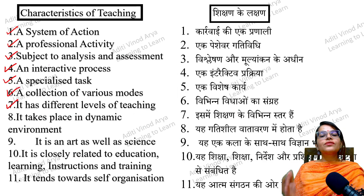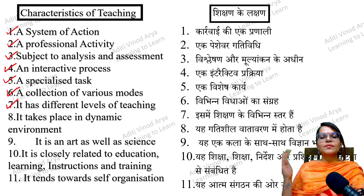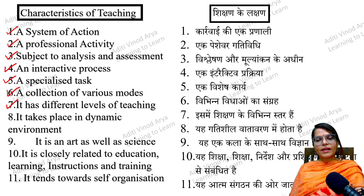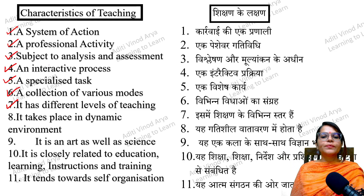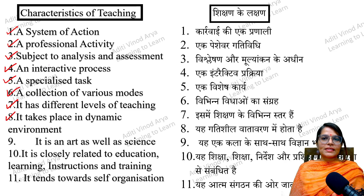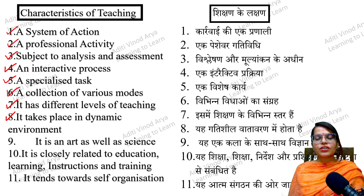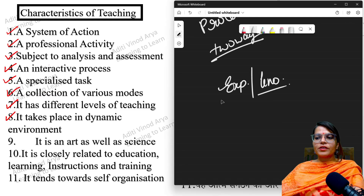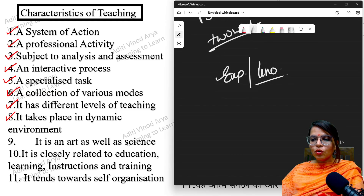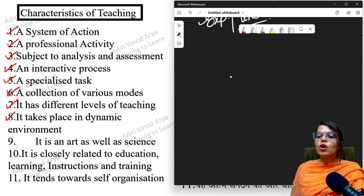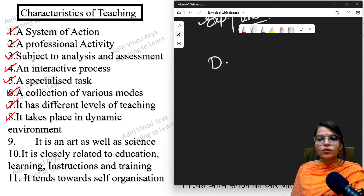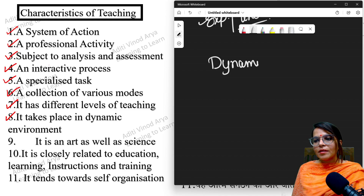Teaching has different levels — it usually has three: memory level, understanding level, and reflective level, which we will learn in the next class. It also takes place in a dynamic environment. Dynamic means which keeps on changing — the teaching process takes place in an environment that changes frequently.